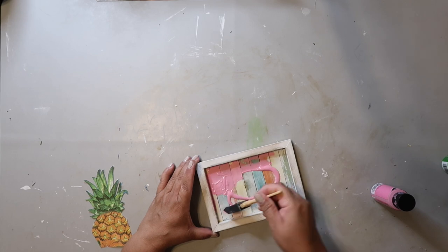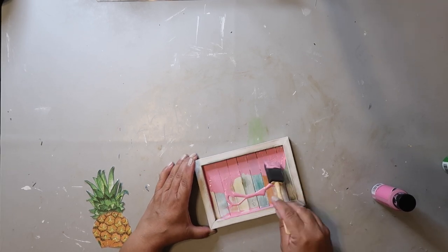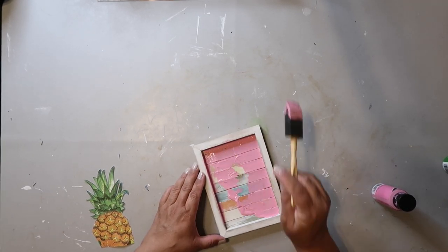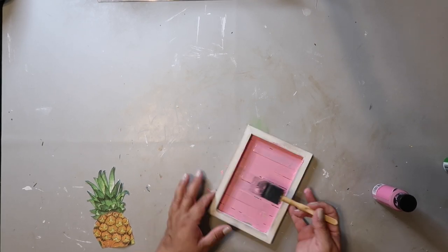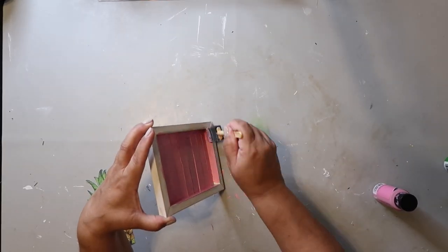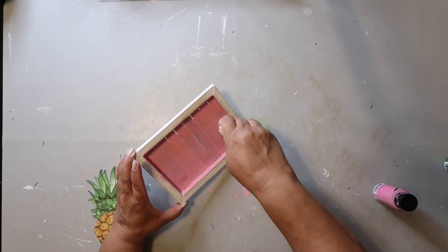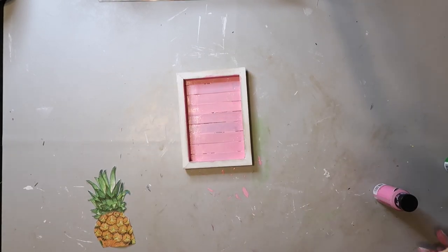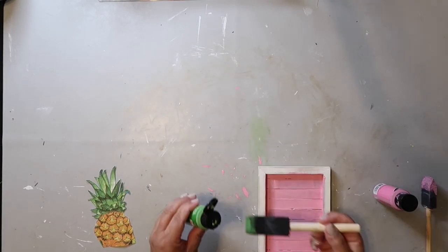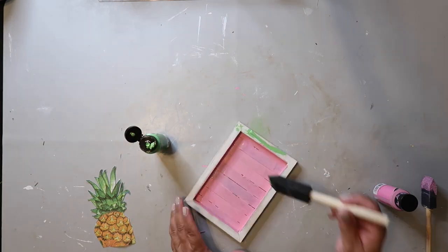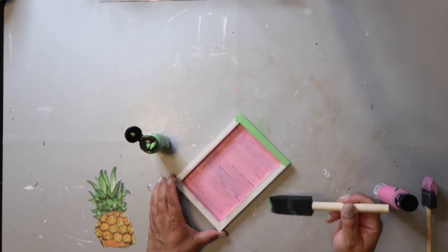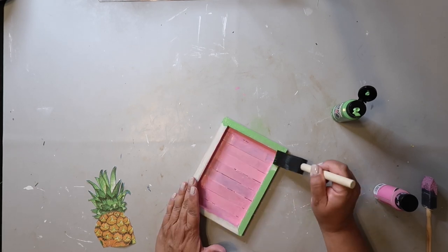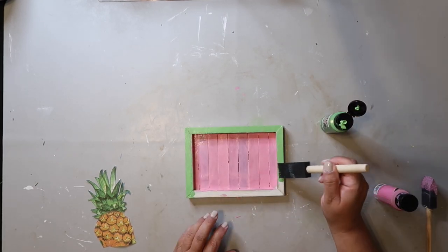This project was again, another one that I had started to do something else with it. Didn't like how it was turning out. So I just used the pink that I've been using for the other projects, and I'm painting the inside pink. Now I'm going to take my green that I've been using for the other projects. And I'm going to paint the top of the frame, not the whole frame, but anyway, the top of the frame, that green color.